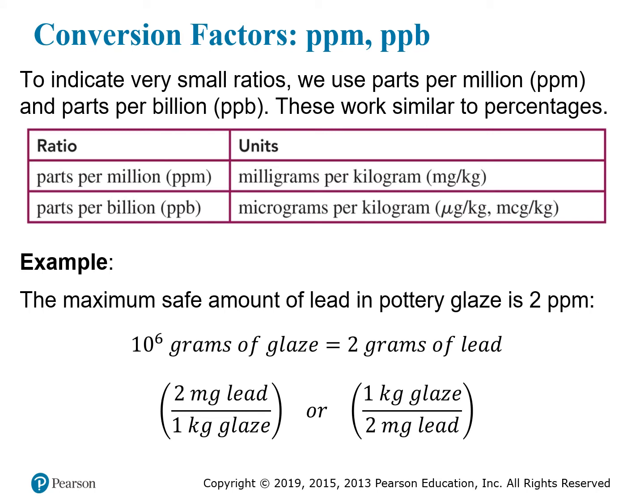Parts per million and parts per billion are a little confusing at first, but they actually work very similar to percent. If you think of percent as parts per 100, then parts per million and parts per billion are directly analogous. Parts per million means that you have one part for every million total. So if the maximum safe amount of lead in pottery glaze is two parts per million, that means for every million grams of glaze (10 to the sixth), you can only have two grams of lead to be below the maximum safe level. You can write this ratio as two grams divided by a million grams, but that's a lot of zeros, so you can also convert to a different ratio: two milligrams per one kilogram. The prefixes make it so that this ratio is the same as a two to one million ratio.